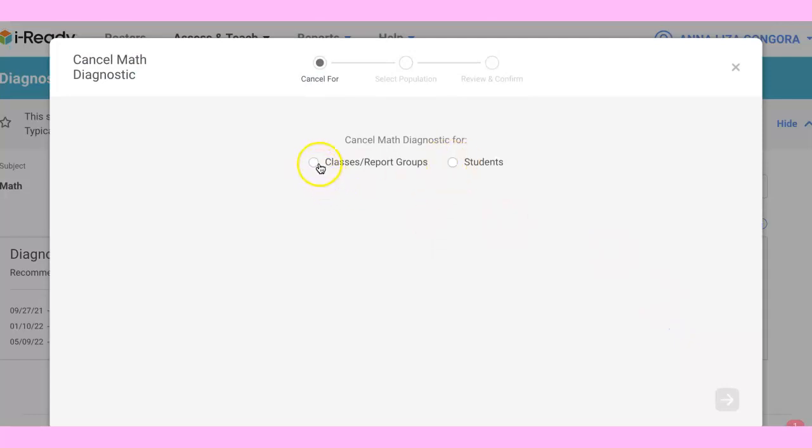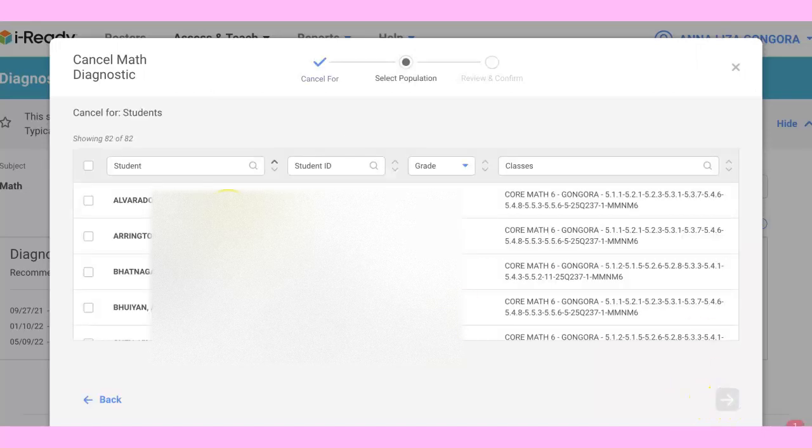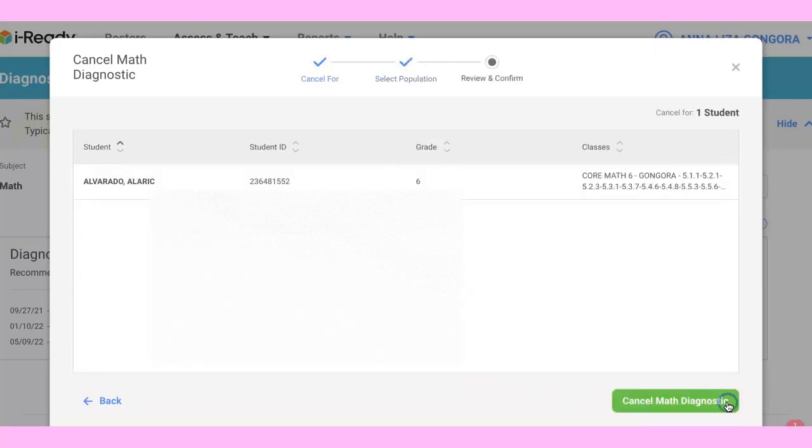If it is the whole class, do the whole class. If it's just one student, select that student and then go. Pick the student you want to reset, for example this one, and then press Cancel Diagnostic.